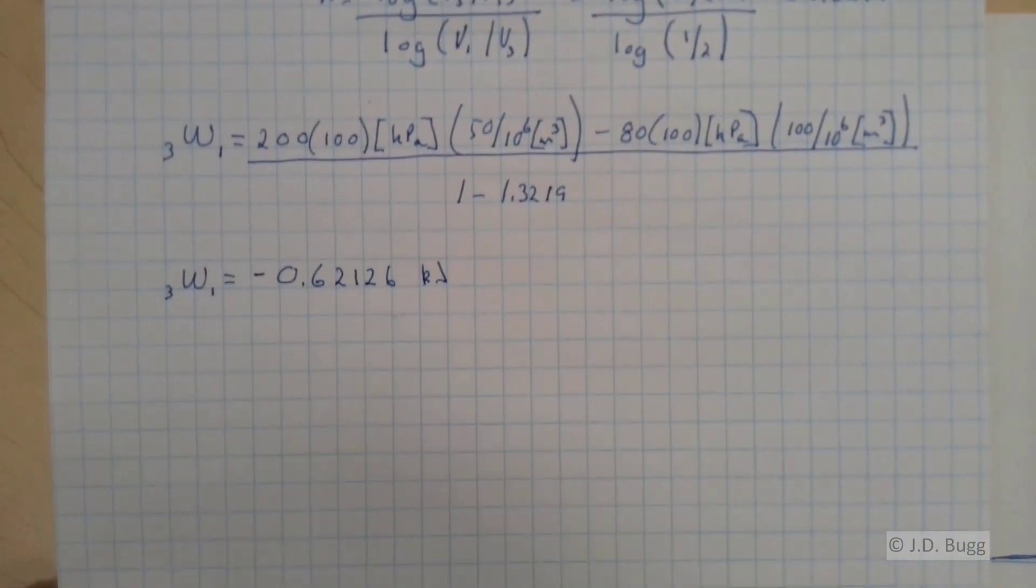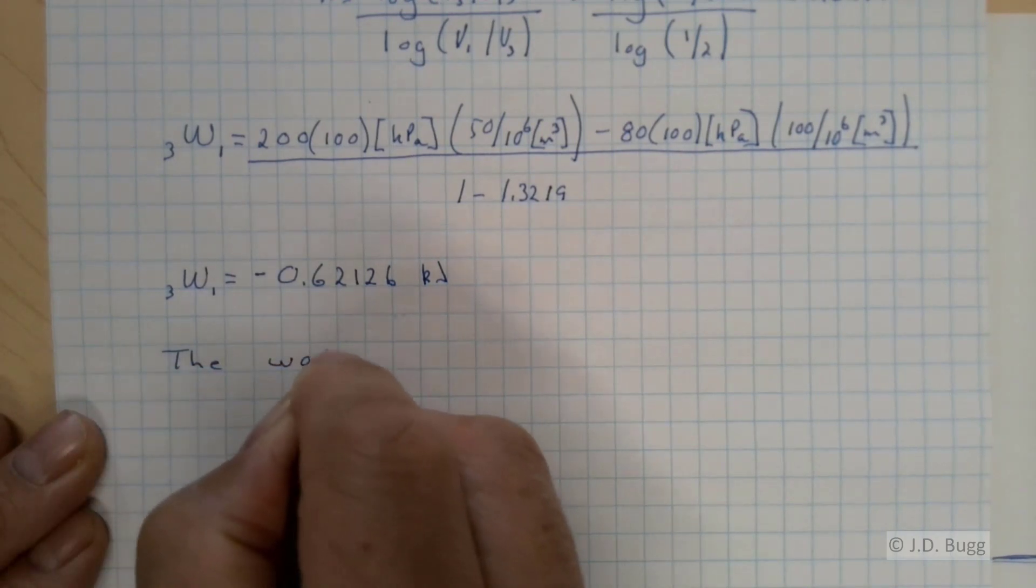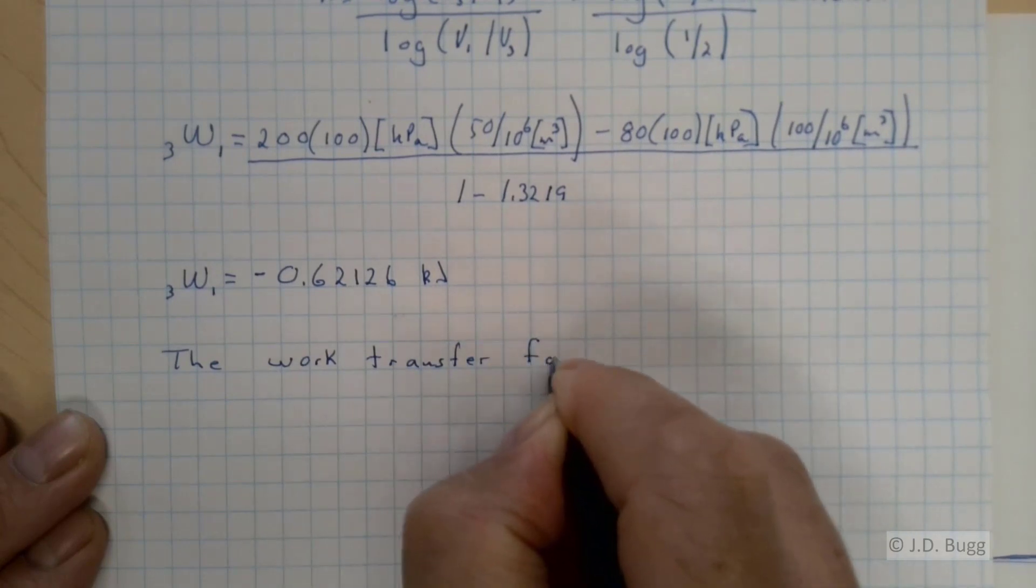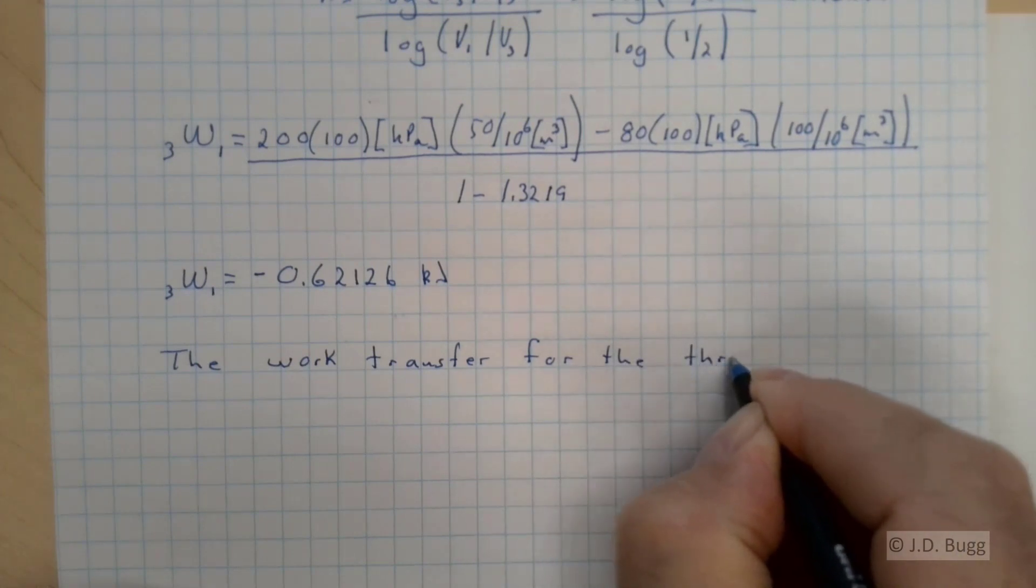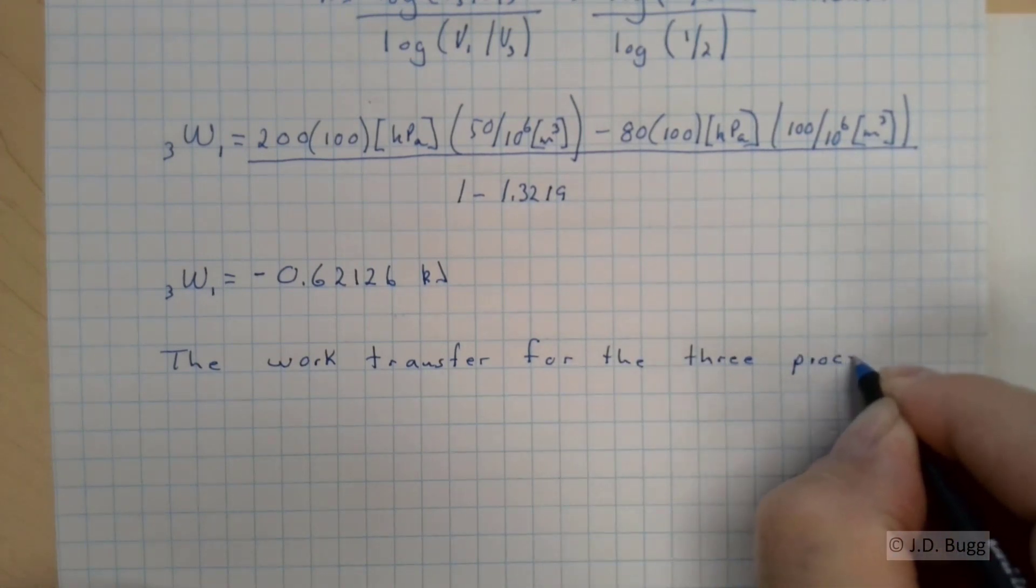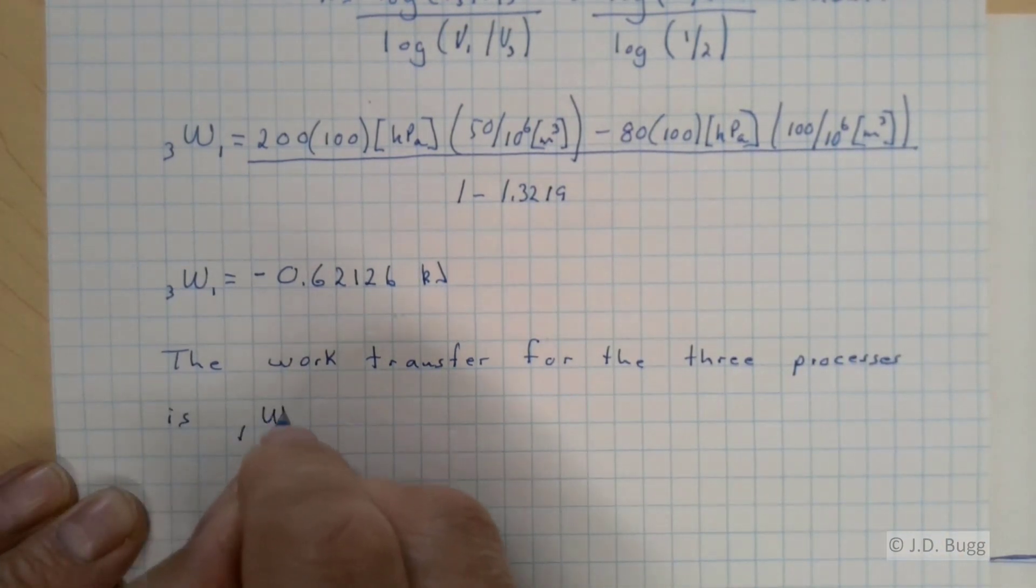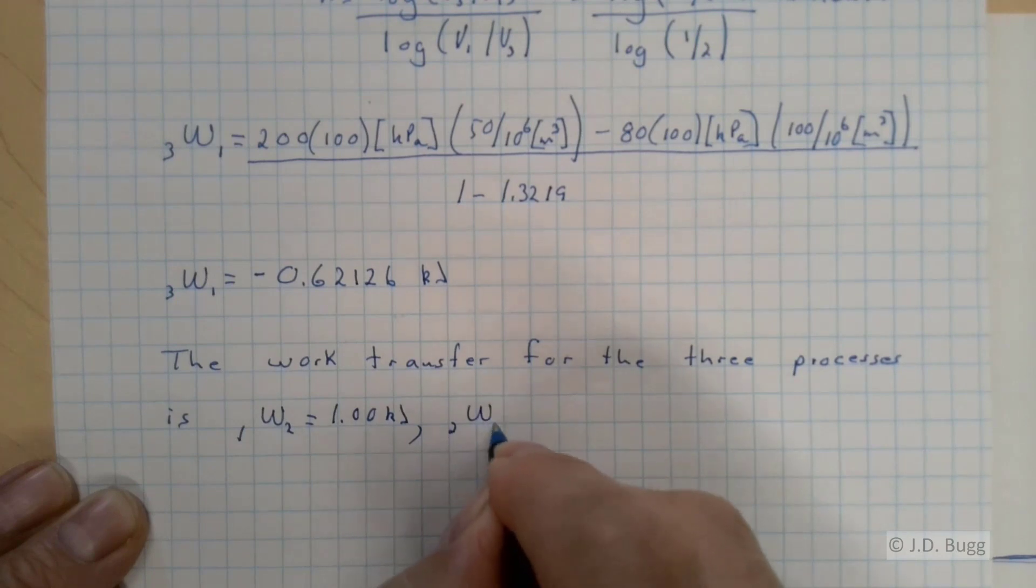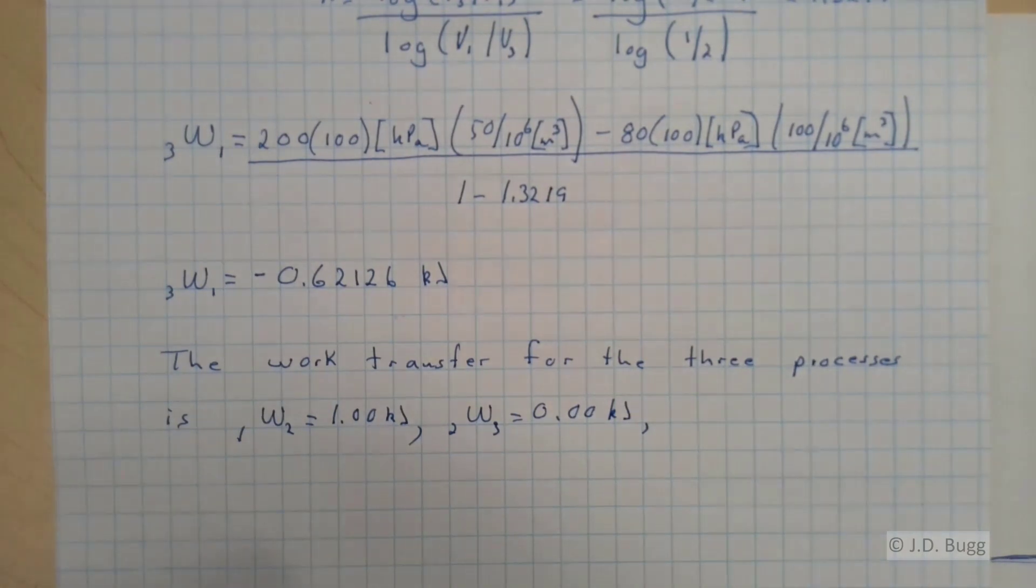So we can finish off here then with our final statement. The work transfer for the three processes is the work from 1 to 2 is equal to 1.00 kilojoules. The work from 2 to 3 is 0.00 kilojoules. Remember that's our constant volume process.